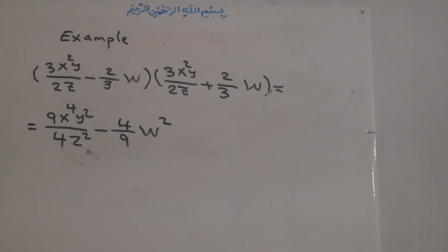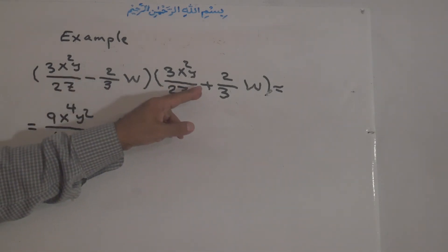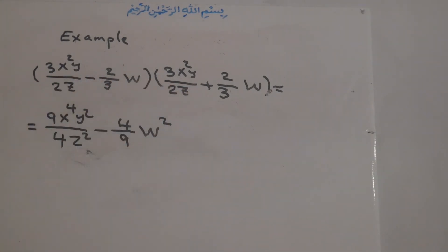We just write the first term to the power of 2 and second term to the power of 2. And here it doesn't matter we can write negative here positive here or positive here negative here. Both are the same.